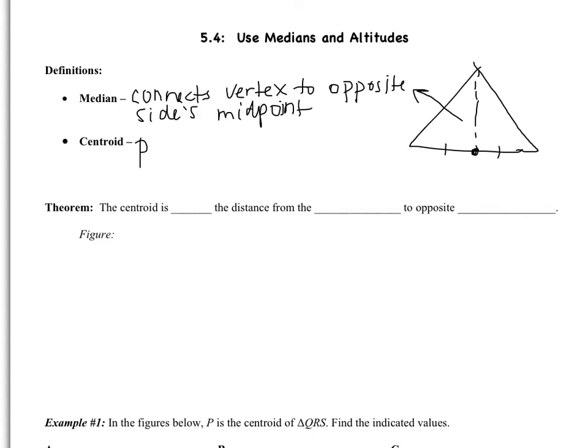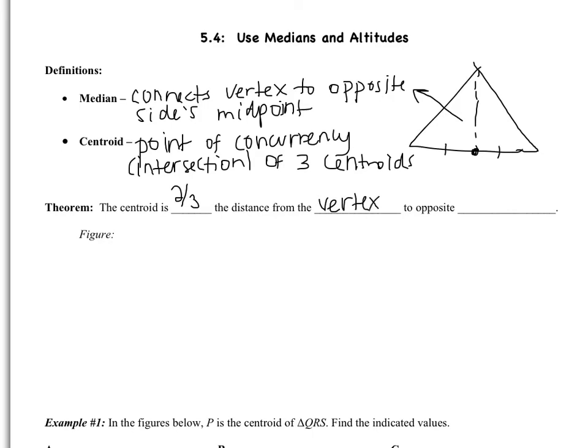The centroid is the point of concurrency, or the intersection point of the three centroids. I want to start right out by telling you what the theorem is. The centroid is two-thirds the distance from the vertex to the opposite midpoint.